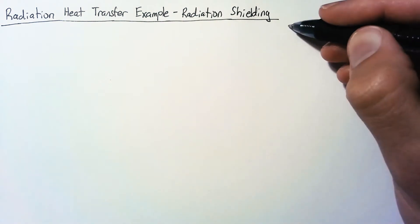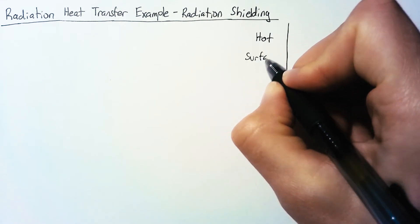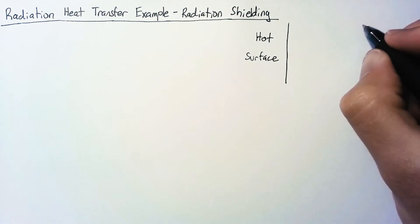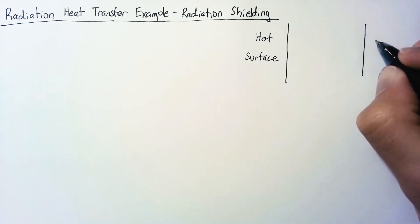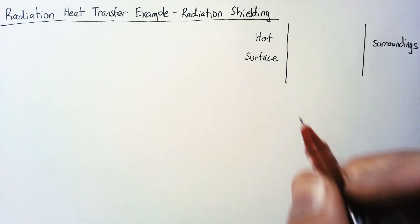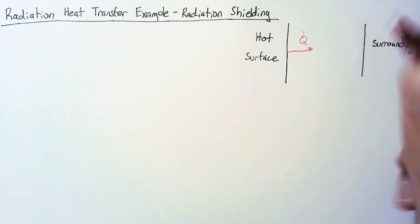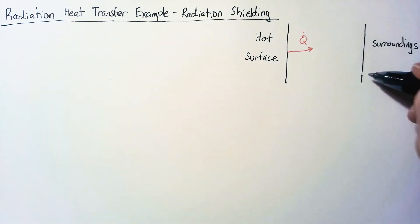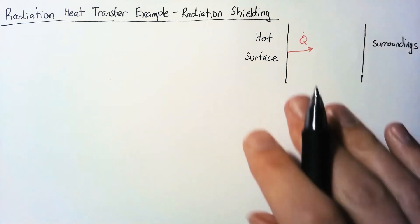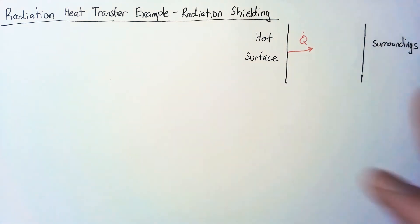Here's the situation. We have a hot surface, and it is radiating heat to its surroundings. For whatever reason, we would like to reduce the amount of heat transfer that is being sent to these surroundings, and so we're going to try some different solutions to reduce this heat transfer.